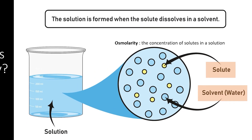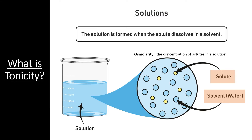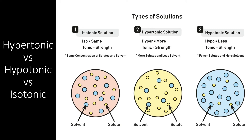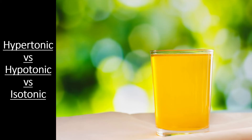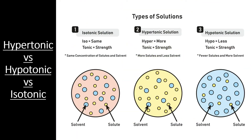The term tonicity refers to a set of terms we can use to compare two solutions and predict how the water molecules and solute particles will react if the two solutions meet. If we are trying to determine the tonicity of two solutions, there are three terms we can use: hypertonic, hypotonic, and isotonic. The important thing to remember is that these are comparative terms — you cannot describe a single solution using the terms of tonicity. For example, a certain sports drink may have an osmolarity of 300 millimoles per kilogram. Without another substance to compare to, you cannot determine whether this sports drink is isotonic, hypertonic, or hypotonic. It depends entirely on the substance you are comparing it to.